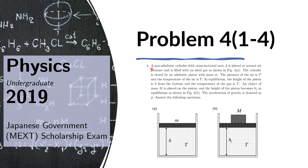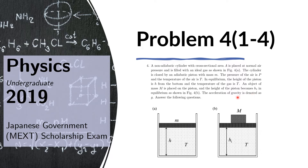Problem 4. A non-adiabatic cylinder with cross-sectional area A is placed at normal air pressure and is filled with an ideal gas, as shown in Figure 4A. The cylinder is closed by an adiabatic piston with mass M. The pressure of the air is P and the temperature of the air is T. In equilibrium, the height of the piston is H from the bottom and the temperature of the gas is T. An object of mass M is placed on the piston and the height of the piston becomes H sub 1 in equilibrium, as shown in Figure 4B. The acceleration of gravity is denoted as G.